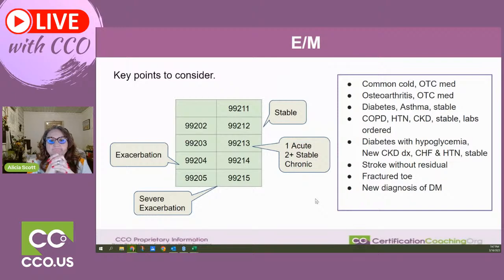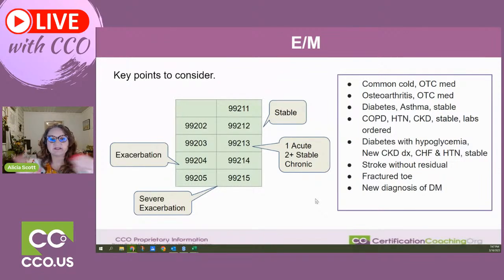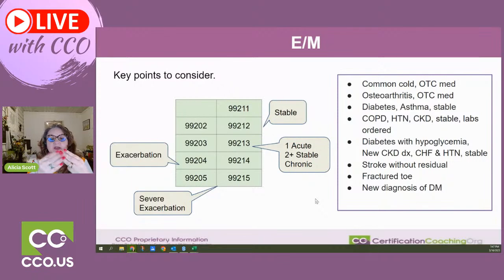Diabetes with hypoglycemia — how many diagnoses? One. Is it complex? Yes — it's diabetes with a complication. Hypoglycemia doesn't say what they're going to do about it, but you've already met two of the three criteria. That's a four. It would be the equivalent of saying there's an exacerbation of the diabetes. One diagnosis — chronic but complex because of the complication — automatically two of three met, so that becomes a four.